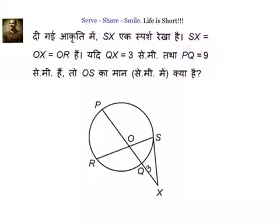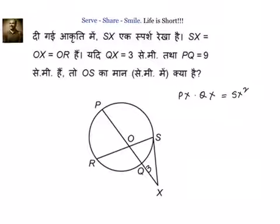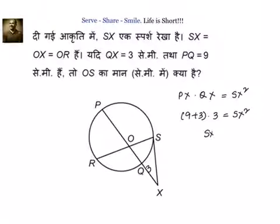We have a theorem which says that whenever we have a secant drawn from point X to the circle, then PX into QX is equal to SX squared. We know PX equals PQ plus QX, which is equal to 9 plus 3, multiplied by QX equal to 3, giving SX squared equal to 36, or SX equal to 6.